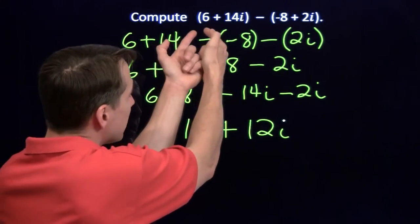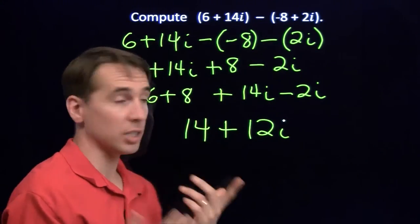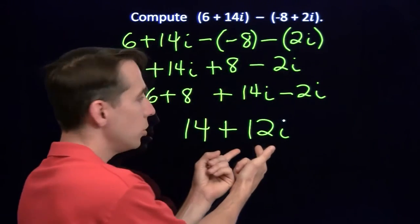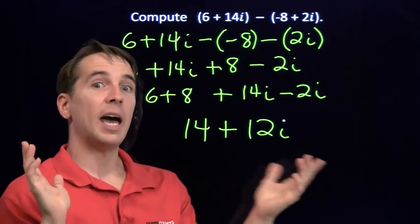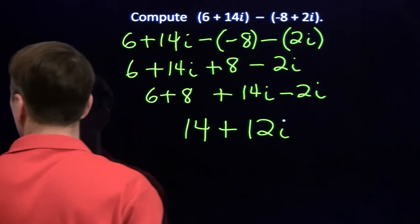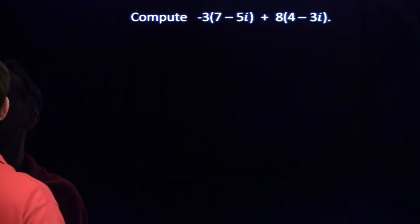Now, we can go back and check. 6 minus a negative 8, 6 plus 8 is 14. 14i minus 2i is 12i. So now we have adding complex numbers down, we have subtracting complex numbers down. Let's look at something slightly more complicated.